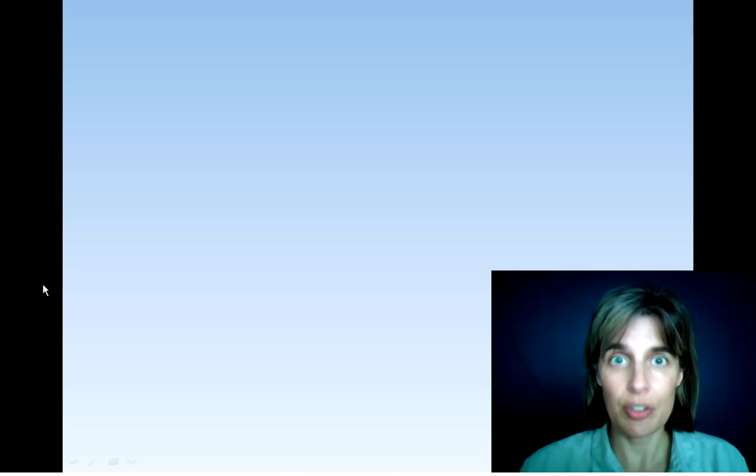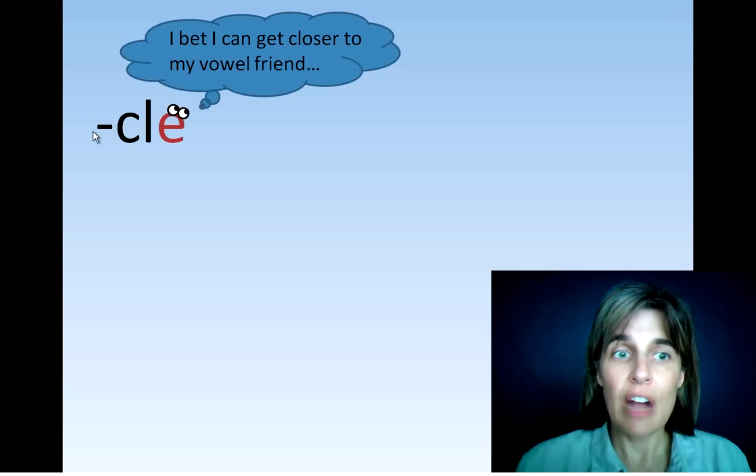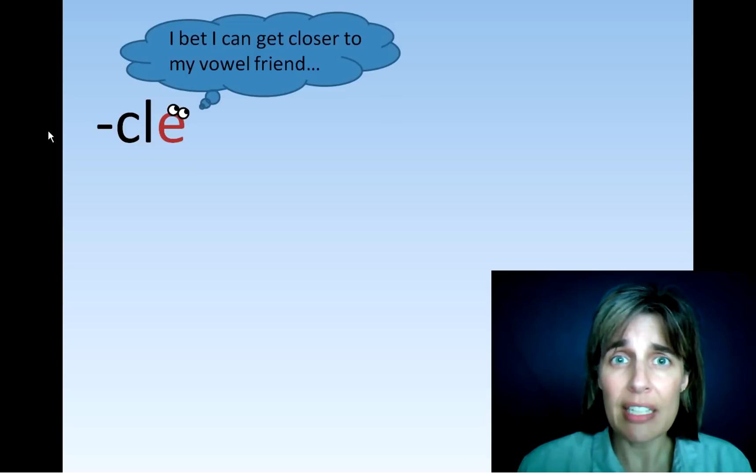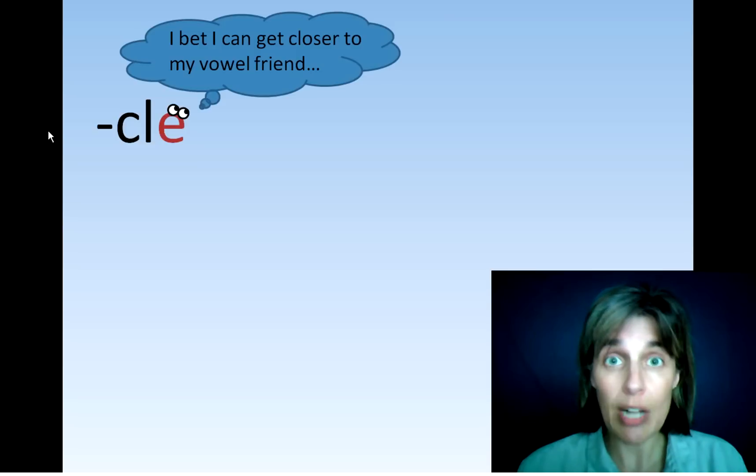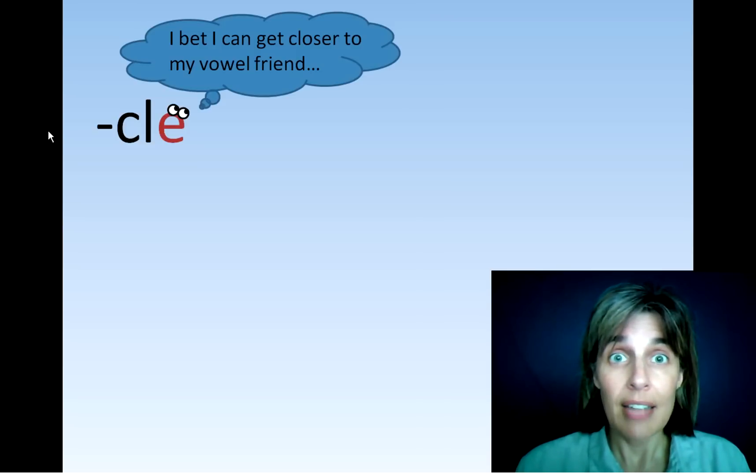So here's what the E is thinking. There's a vowel back here somewhere. So I bet I can get closer to my vowel friend. I'm gonna jump really far back and then I'll be close enough to squirt out my brain and help him.